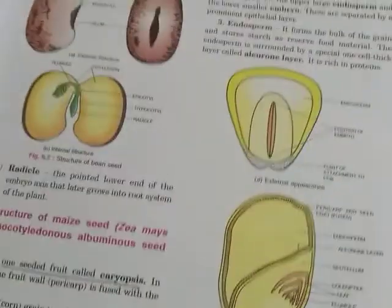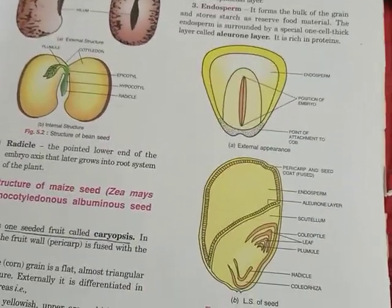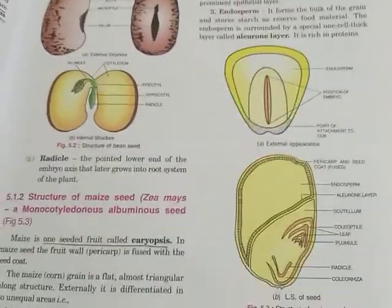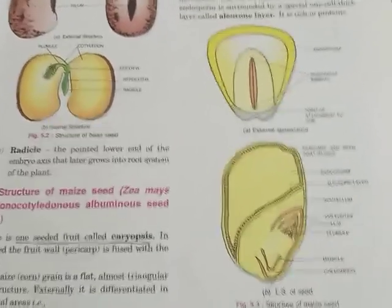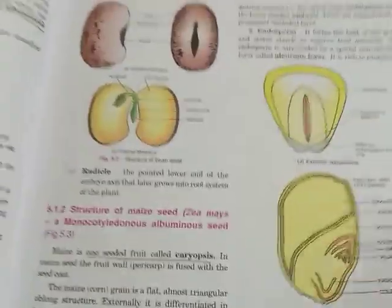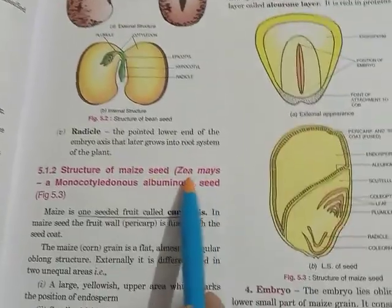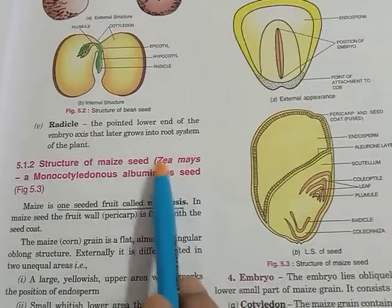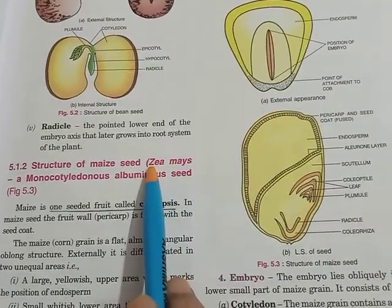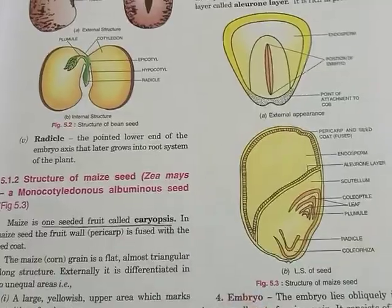This is all about the internal and external structure of the monocotyledon seed, that is the maize. The scientific name of maize is Zea mays. Learn this scientific name — Zea mays.